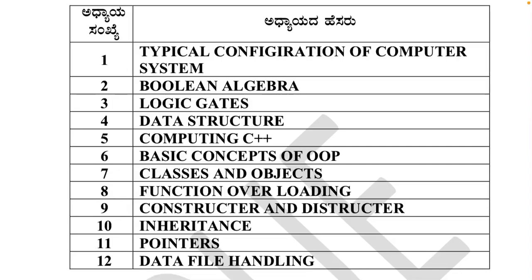These are the chapters that have been included this year: configuration of computer system, boolean algebra, logical gates, data structure, computing, C++ basic concepts, OOP, classes and objects, function overloading, constructors and destructors, inheritance, pointers, and data file handling.